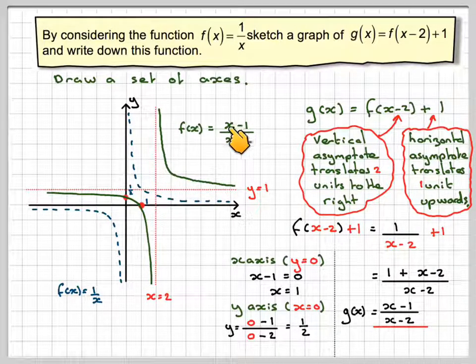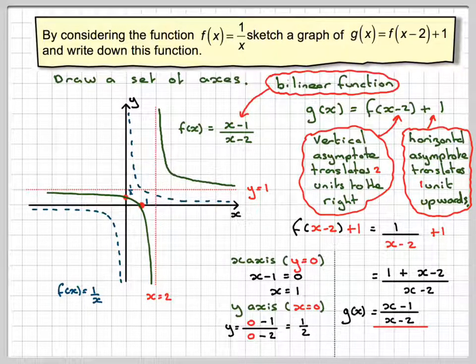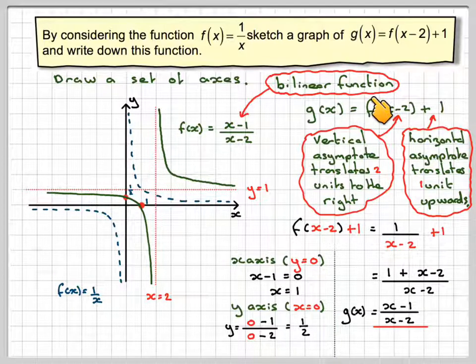Now this sort of function, this is a linear function, this is a linear function. So the name of this type of function, which is written like this, is called the bilinear function.